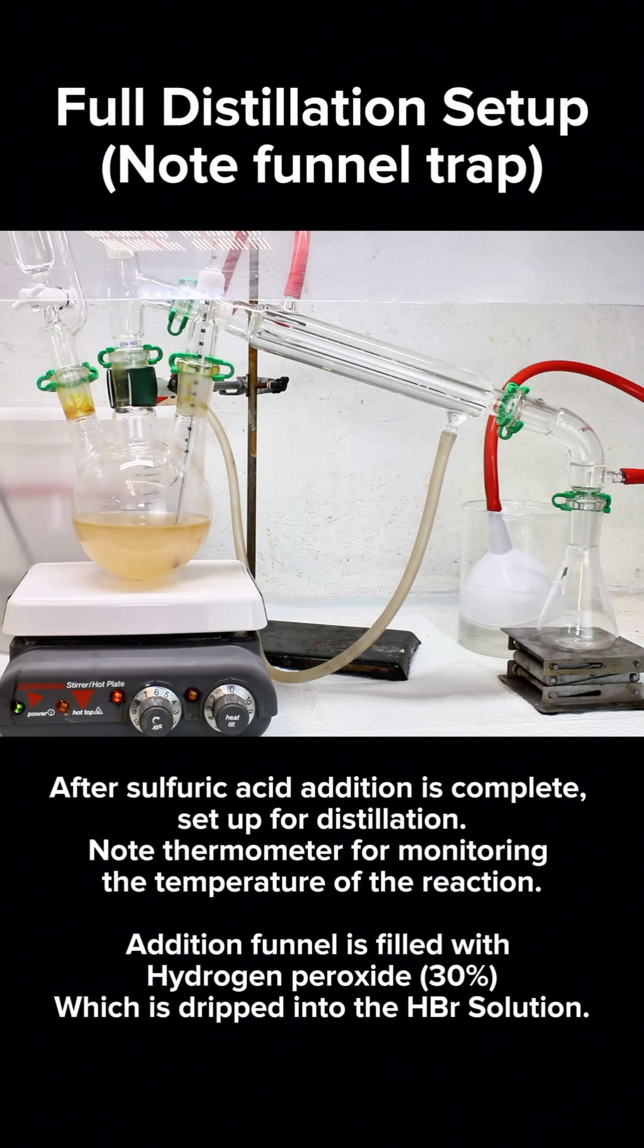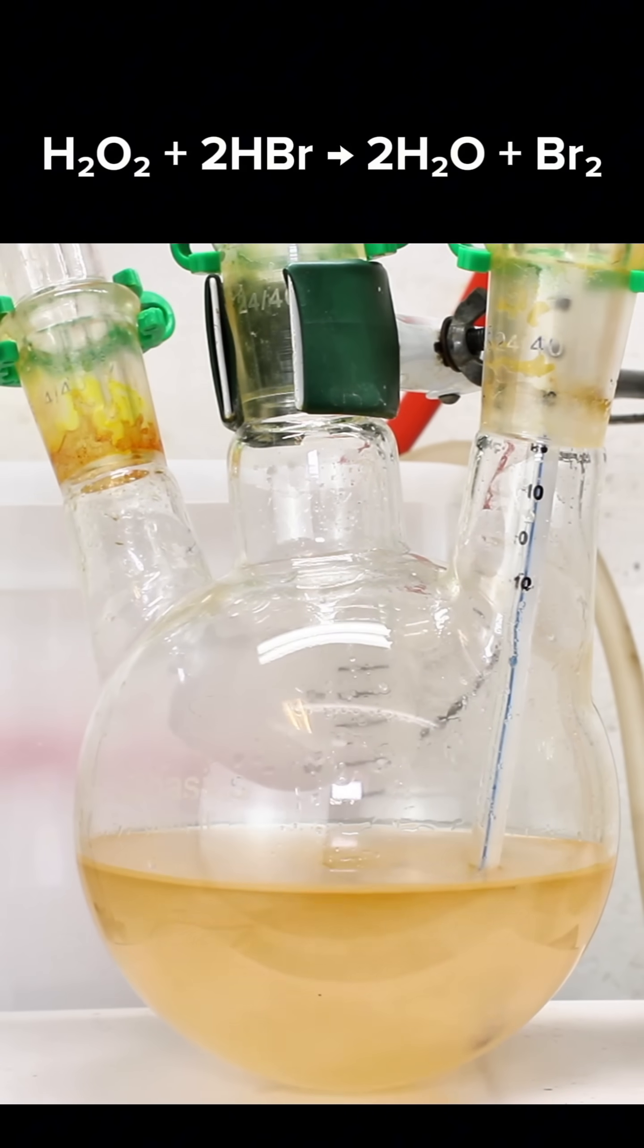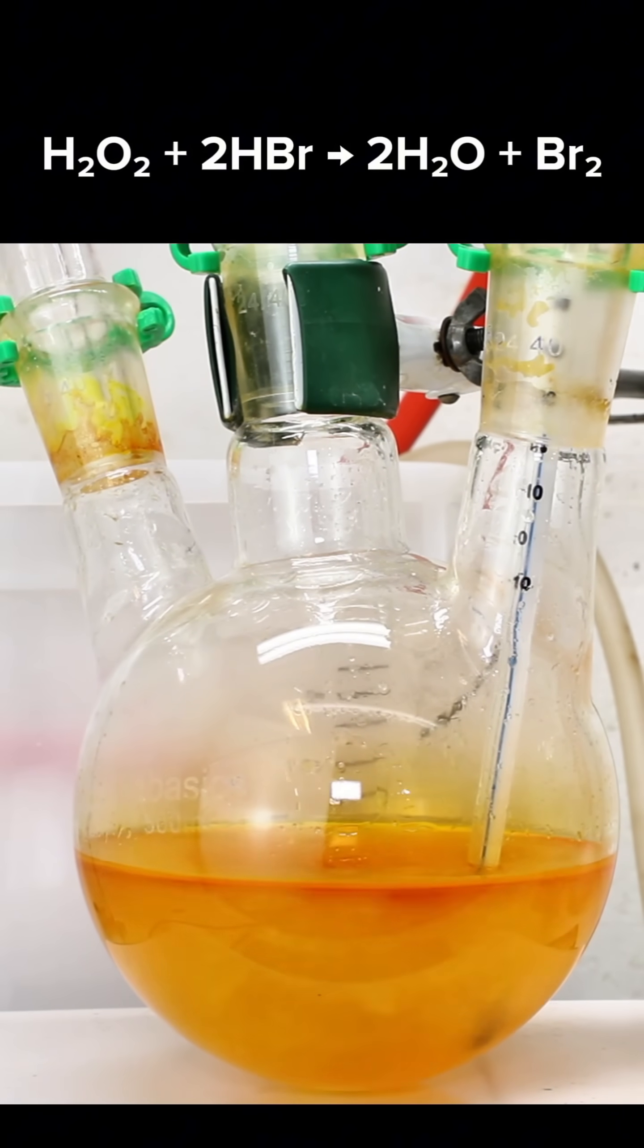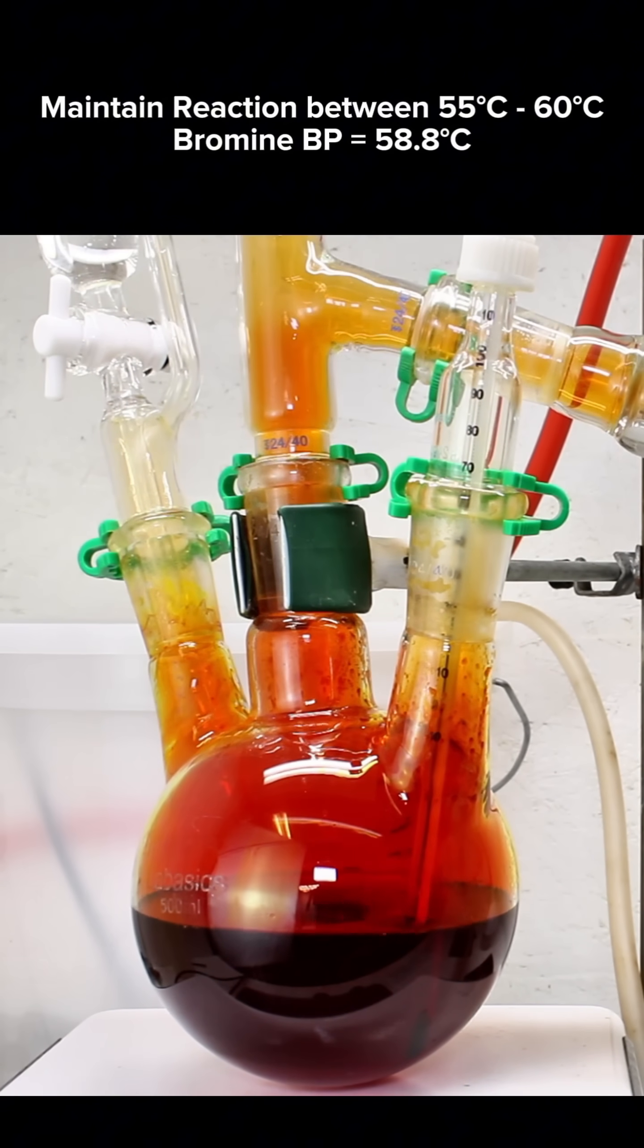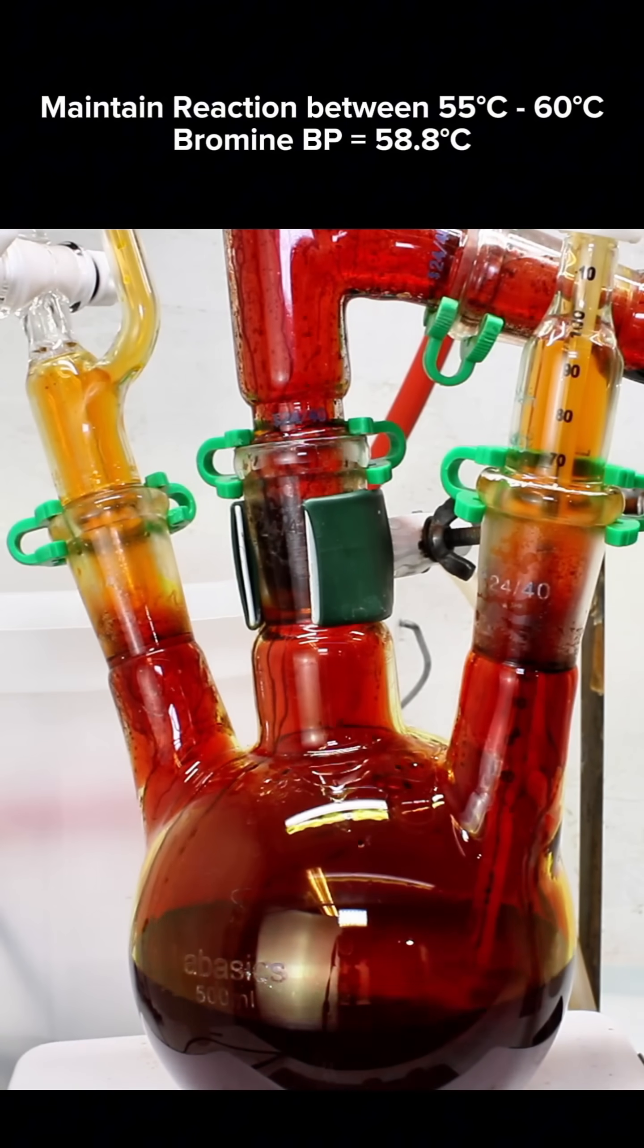I used a three neck round bottom boiling flask with an addition funnel filled with 30% hydrogen peroxide. This is carefully dripped into the reaction mixture, at which point it will react with the hydrobromic acid forming water and elemental bromine.